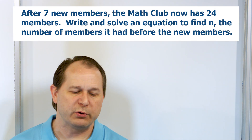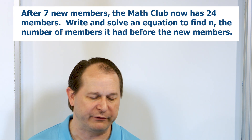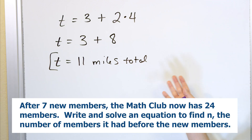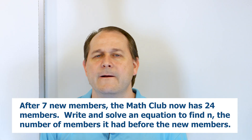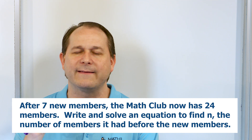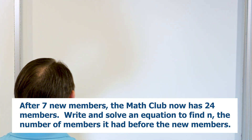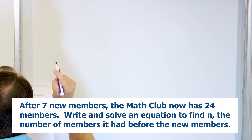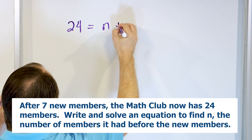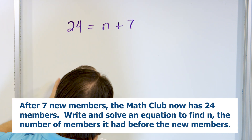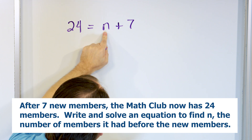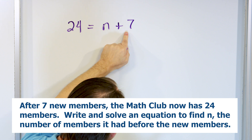Problem number three: after recruiting seven new members, the math club now has 24 members. Write and solve an equation to find N, the number of members the math club had before the recruitment. Notice in the first and second problems we used different variables. Here we're using N — you're free to use whatever letter makes sense to you. N is the number of members before recruitment. You started with N members, added seven new members, and now have a total of 24: N plus seven equals 24.